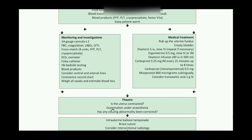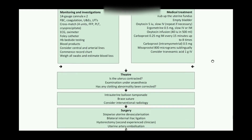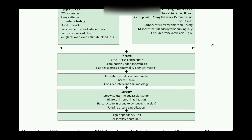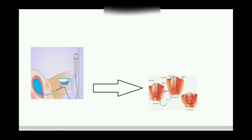If medical management doesn't work, we shift the patient to theatre. In theatre, we perform examination under anesthesia, check whether the uterus is contracted or not, and correct any clotting abnormality. Further management in theatre includes intrauterine balloon tamponade and the B-Lynch suture.